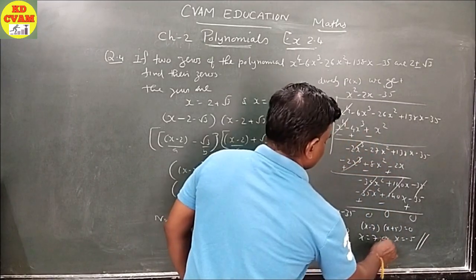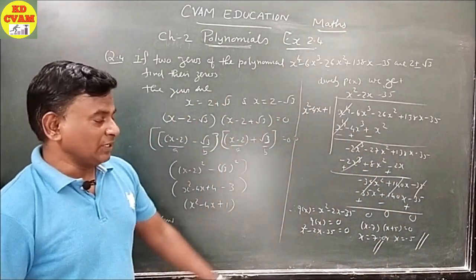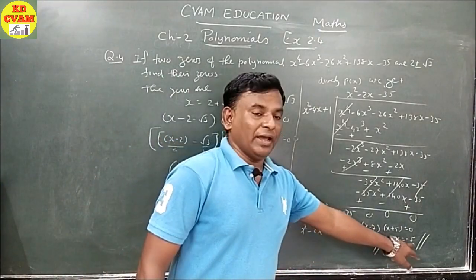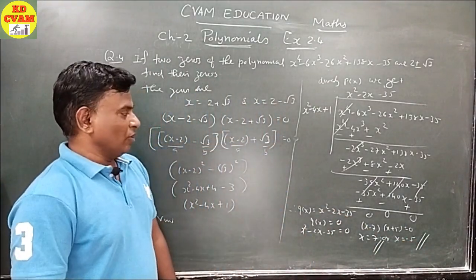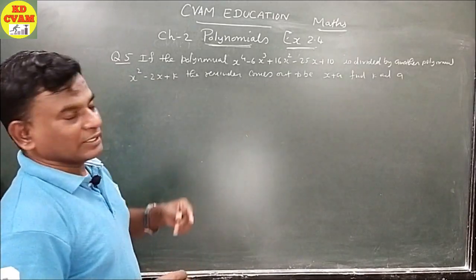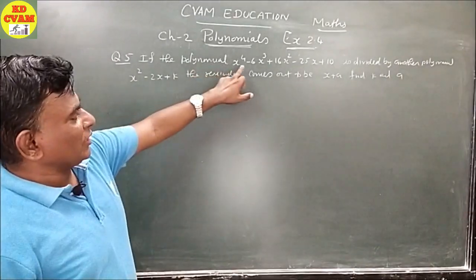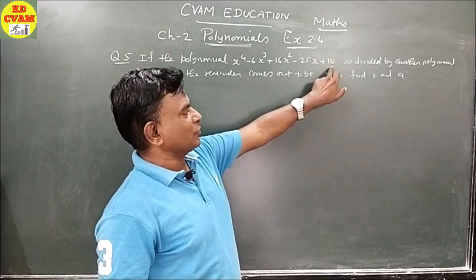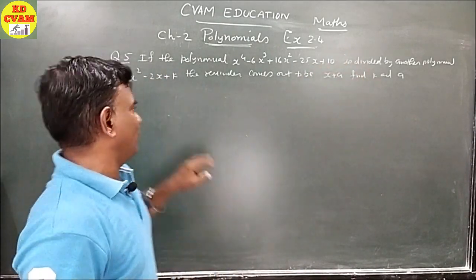This is your answer. The zeros are 7 and -5. Now for our last sum, question number 5: if the polynomial x⁴ - 6x³ + 16x² - 25x + 10 is divided by x² - 2x + k, the remainder is x + a. Find k and a.